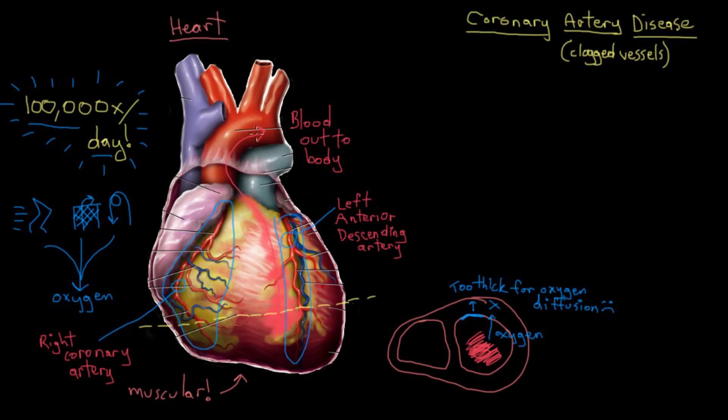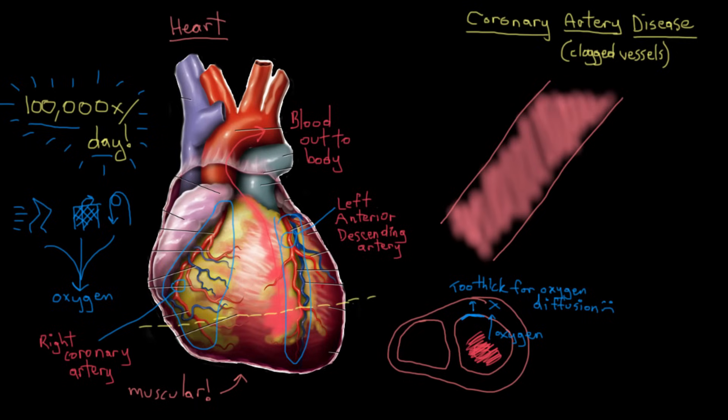They're called clogged arteries because there's this buildup of fatty substances that's almost like plumbing being clogged. So let's actually draw this out. Here is a close-up of the coronary vessel. We have one wall there and the other wall here. Here's your blood, and here's some components of your blood. You've got your red blood cells, and here's some cholesterol, and here's some white blood cells.